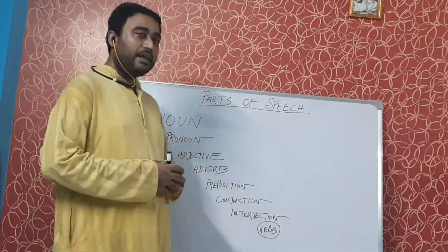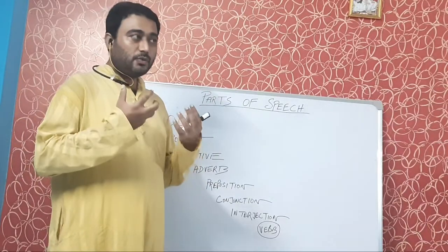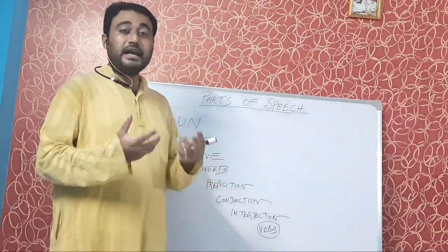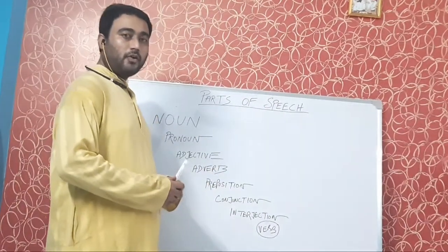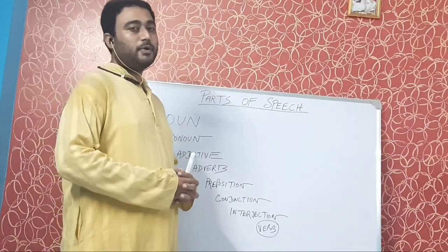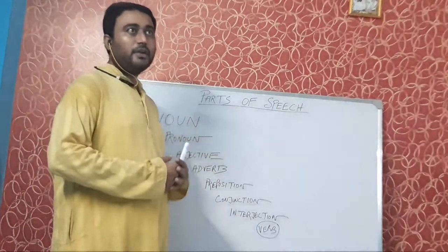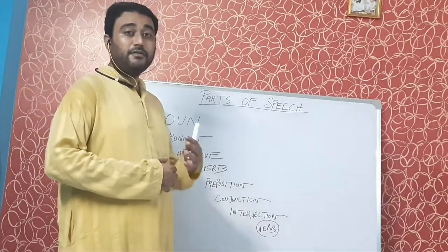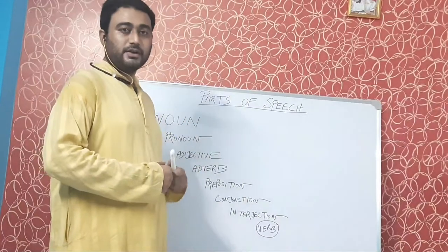Most importantly, any idea can be abstract. Abstract means something which cannot be picked, which cannot be touched — you can only feel it. For example, honesty is the greatest virtue. The word honesty is a noun because honesty is something which we cannot see, which we cannot touch, but we can only feel it.